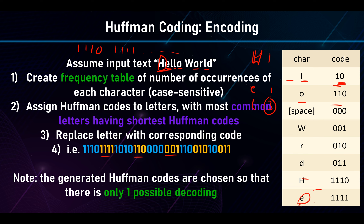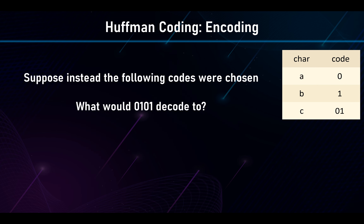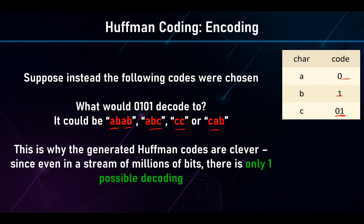The clever thing about Huffman codes is that they're generated so there's only one possible decoding. Otherwise you get ambiguity — for example, if A=0, B=1, and C=01, then the sequence 0101 could be decoded as ABAB or CC. It's important that even with millions of bits there's still only one possible decoding, otherwise it just won't work.